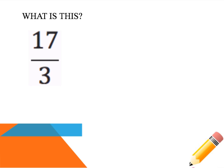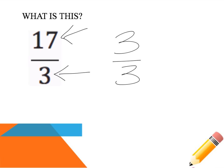So looking at an improper fraction or fraction greater than one — what is 17 over 3, or 17 thirds? I can tell this is a fraction greater than one right away because the top number, the numerator, is larger than the bottom number, which means we have more parts than parts in the whole. If our denominator is three, three out of three parts would make a whole, so anything larger than three means it's greater than one.